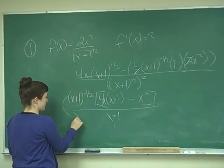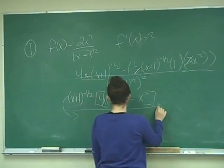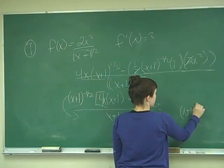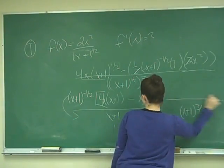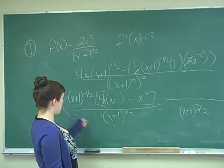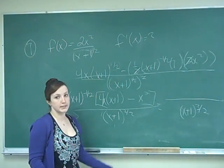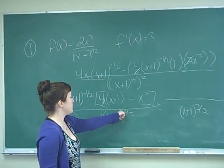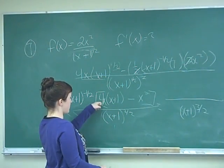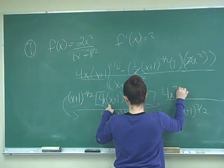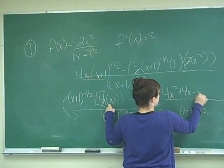Because 1 half squared is just to the first power. So we're going to bring this guy down here, and that will give me x plus 1 to the 3 halves on the bottom. Because this is, remember, to the 2 halves plus a 1 half. It becomes positive when we bring it down to the denominator, plus 1 half will give me 2 halves plus 1 half is 3 halves. So now I just have up here to distribute. That's going to give me 4x squared plus 4x minus x squared.